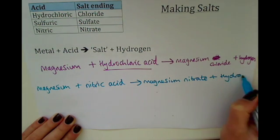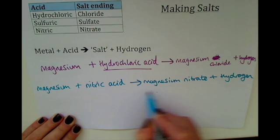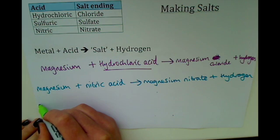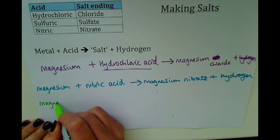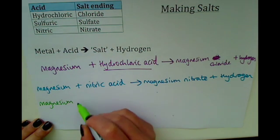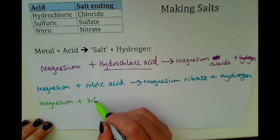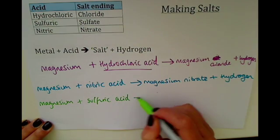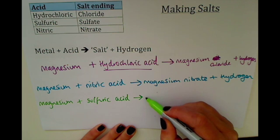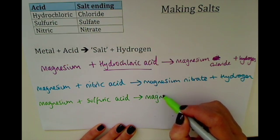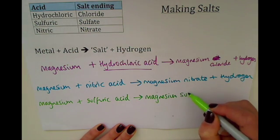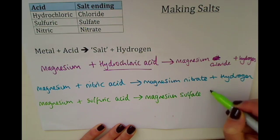The hydrogen bit doesn't change — we're just changing the salt. As a final example, if we were to use sulfuric acid, we would have magnesium plus sulfuric acid, which would make magnesium sulfate plus hydrogen.